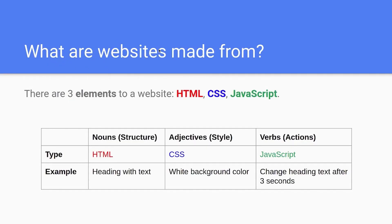What actually are websites made from? There are three elements to a website: HTML, CSS, and JavaScript, and they all have a single function. HTML is the nouns — what there is. For example, a heading with text. That is something there, there's structure.